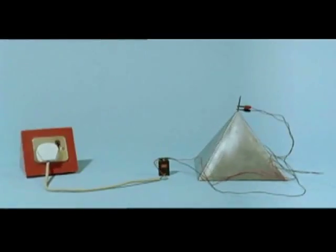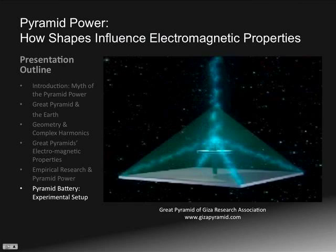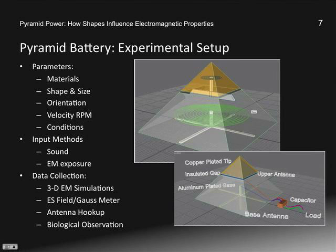So next semester, just to conclude, I'll be doing the pyramid battery experimental setup, varying parameters in terms of materials, shape and size, the orientation of the pyramid, and the velocity. Maybe we might have to spin this thing, the conditions in the environment as well. Input methods, we'll use sound and EM waves to enhance the energy. And in terms of data collection, I'll be doing some 3D simulations using an ES field meter and a Gauss meter, as well as an antenna hookup.